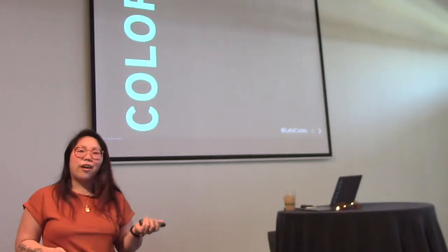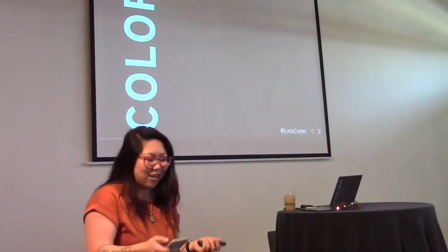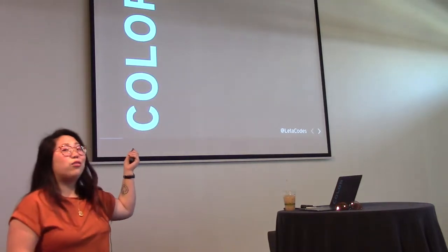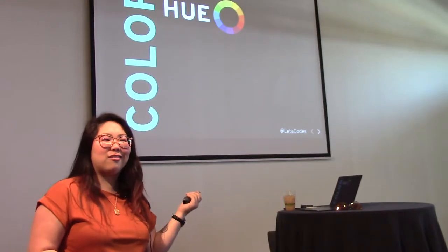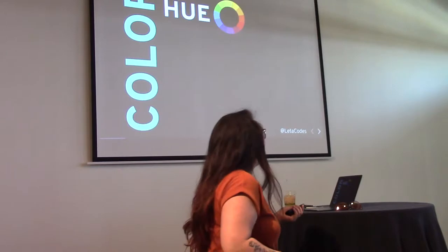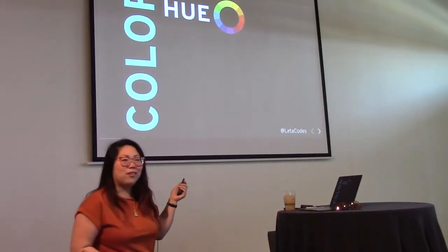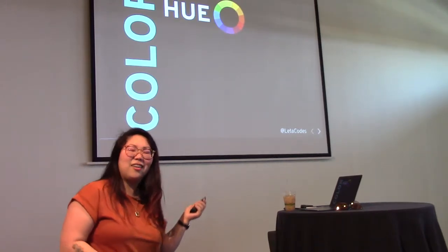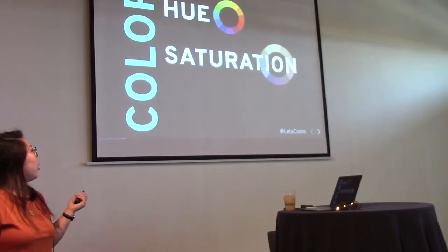Let's start out by diving into what exactly color is. It's not something we think about too often, but we can break it down into three basic pieces. Starting with hue. Hue is just what we think of when we think of colors — red, orange, green, yellow. It's like the Crayola colors. One of my favorite hues is macaroni and cheese, and also tickle me pink. Those are my favorite crayons when I was growing up.